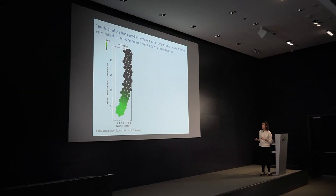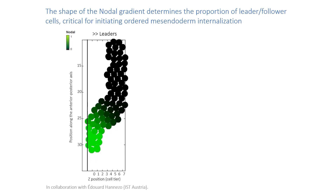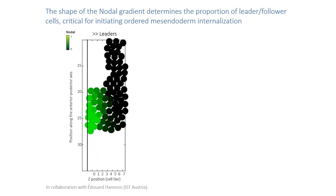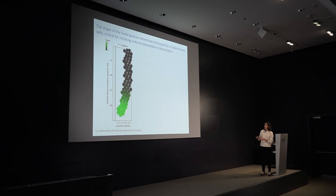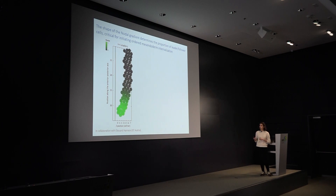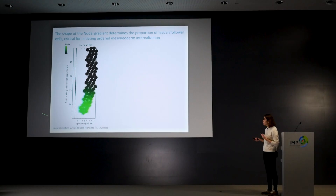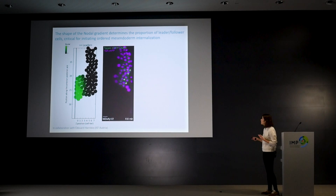What happens to tissue movements? The whole thing is now much more messy — a large fraction of the tissue internalizes in parallel because all these cells are so high in motility that they can all start internalizing at the same time. The relative position of the cells is completely lost — you no longer have the first-in-first-out rule — because now it's very hard for cells at the edge of the tissue to start moving upwards and migrating to the anterior. Can we look at the actual embryos and see whether they look like the simulations?